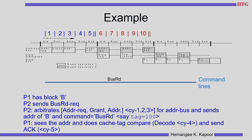Now we will see an example of the split transaction bus showing exactly how the various phases get used. Assume processor P1 has a block and processor P2 wants to get it, so overall P1 will send the data to P2. Because P2 wants the block, it sends a bus read request during the first address request phase. P2 sends the address request on the bus — it puts the request, eventually gets a grant. Once it gets the bus grant, it puts the address of block B in the third clock cycle.